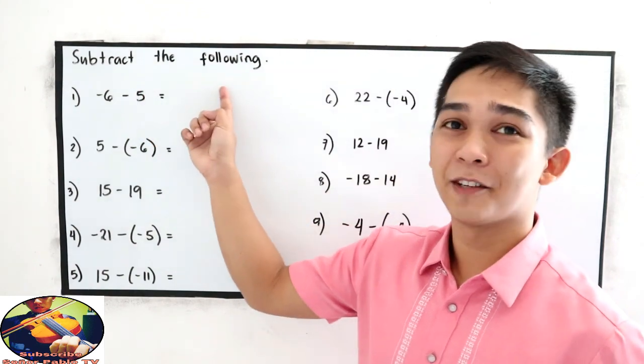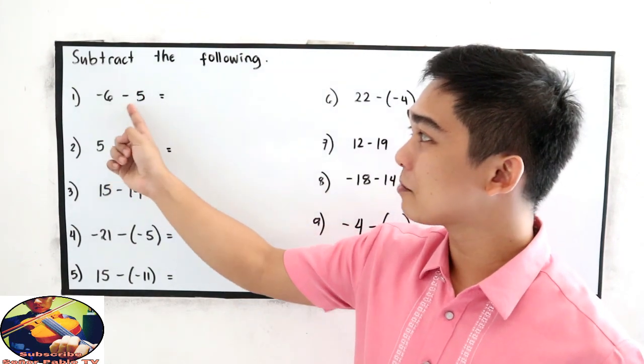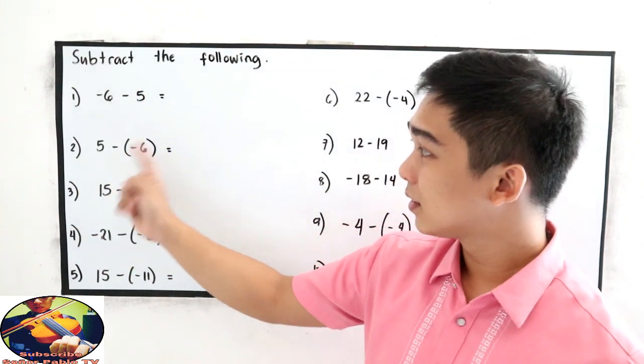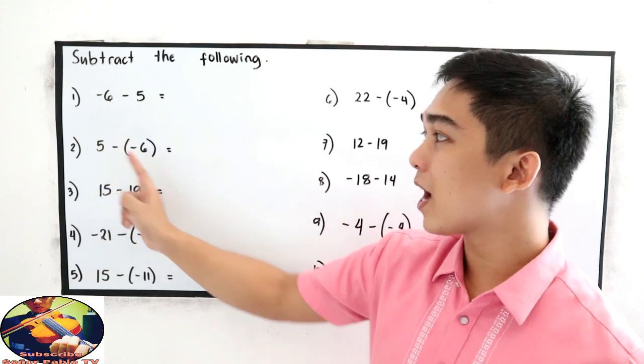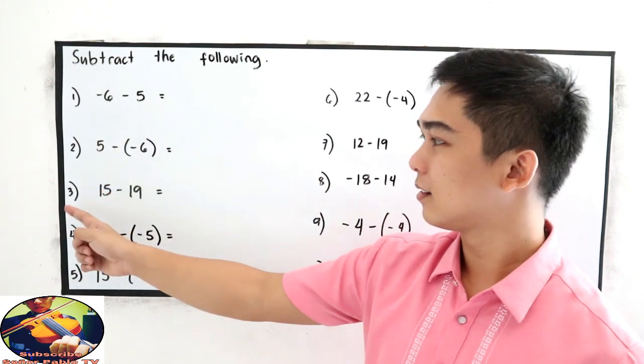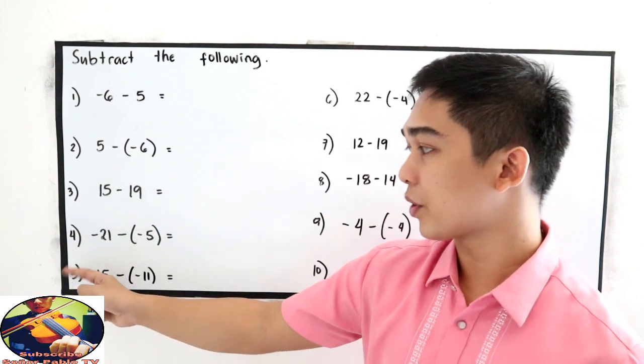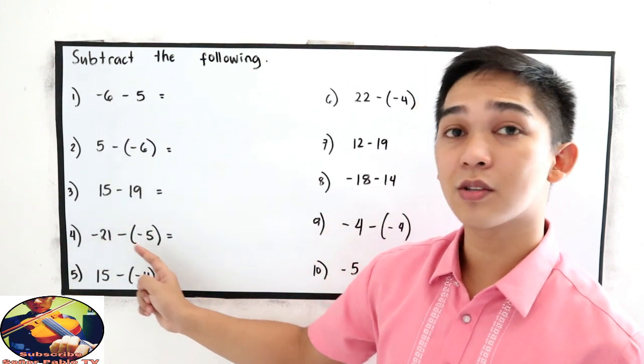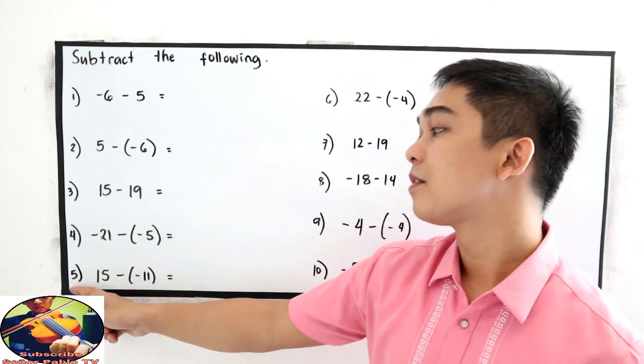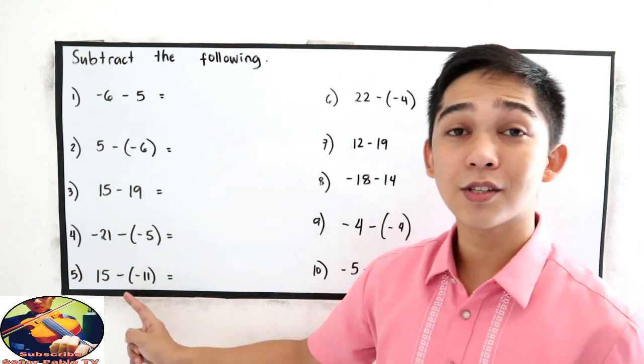Subtract the following: negative 6 minus 5, number 2, 5 minus negative 6, number 3, 15 minus 19, number 4, negative 21 minus negative 5, number 5, 15 minus negative 11.